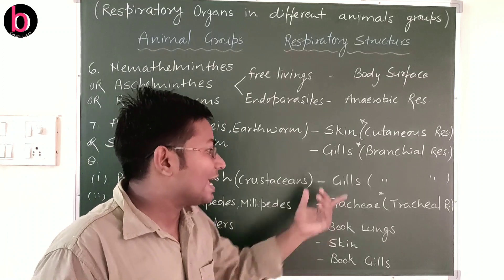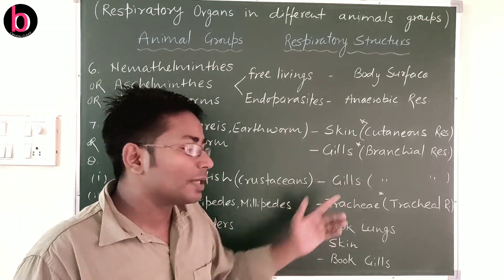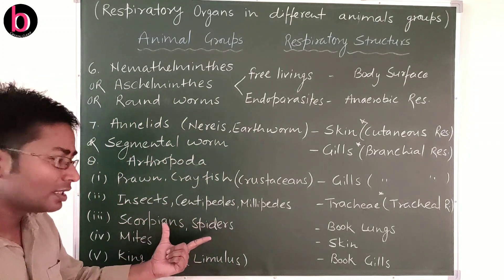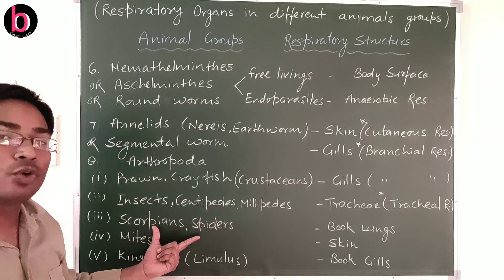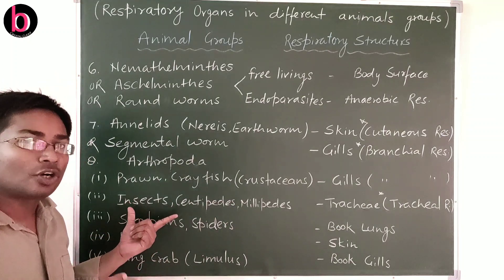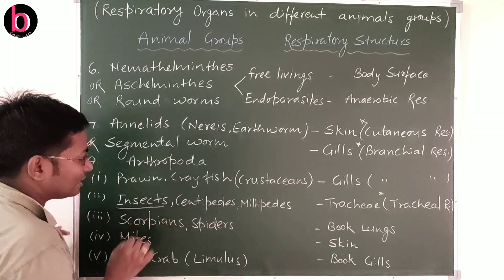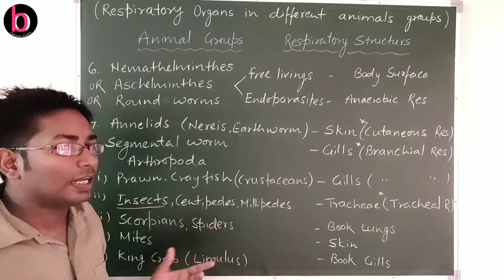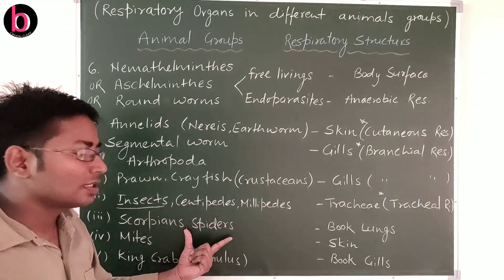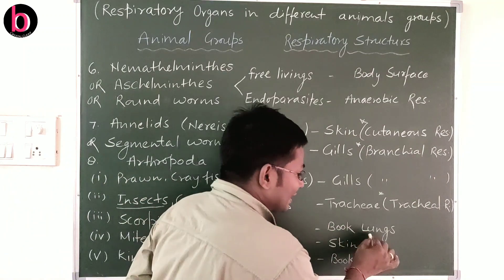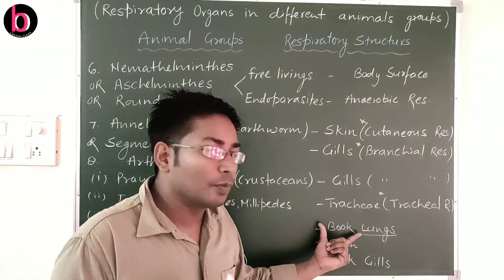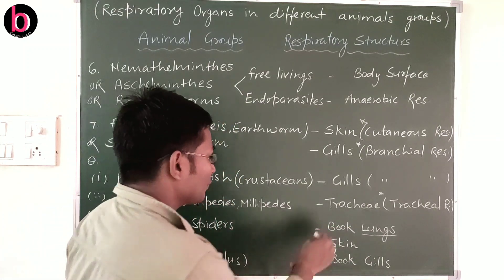To summarize so far: respiration through skin is cutaneous, through gills is branchial, through tracheae is tracheal, and through lungs is pulmonary — as in humans and highly developed animals. Scorpions and spiders have four pairs of legs and are terrestrial. They have lung-like structures whose appearance resembles the pages of a book, known as book lungs.